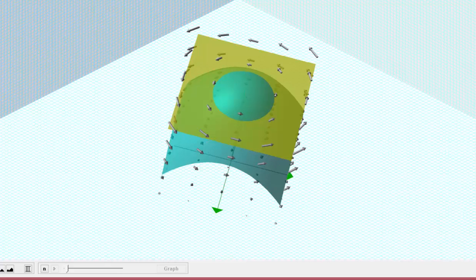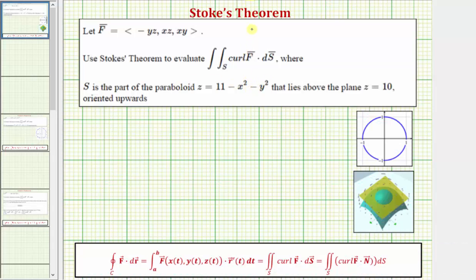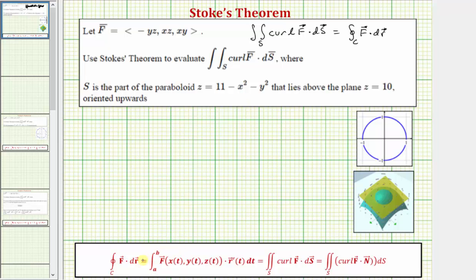Going back to our problem, by applying Stokes' Theorem, the double integral over the surface s of the curl of f dot differential s can be evaluated by using the line integral along the curve c of f dot differential r. To evaluate this line integral, we need to first parameterize the curve c using the vector function r of t, then the line integral along c of f dot differential r equals the integral from a to b of the vector field f expressed as a function of t, dotted with r prime of t dt.